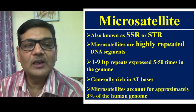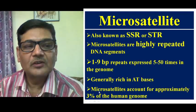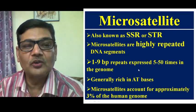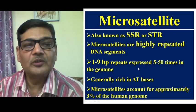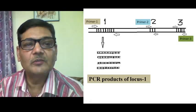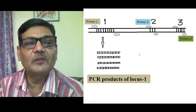Microsatellite segments are generally rich in 80 bases. These segments account for approximately 3% of the human genome, so they have good representation in the entire stretch of the genome — not only of humans, but in almost every eukaryotic organism these microsatellite segments are found.